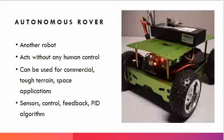An autonomous robot can definitely do things which a line follower robot does, but there are some critical applications in which an autonomous rover can be used. An autonomous rover is basically another type of robot.